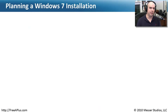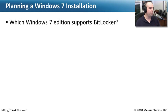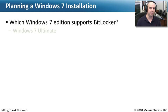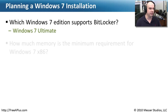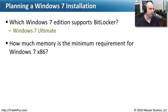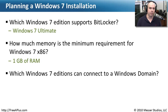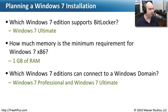Let's review some of the things we've learned. First: which Windows 7 edition supports BitLocker, the full disk encryption capability? Only Windows 7 Ultimate. Second: how much memory is the minimum requirement for Windows 7 x86, the 32-bit version? One gigabyte of RAM. Third: which Windows 7 editions can connect to a Windows domain? If you're in a small, medium, or large business using Windows domain directory services, you need Windows 7 Professional or Windows 7 Ultimate.